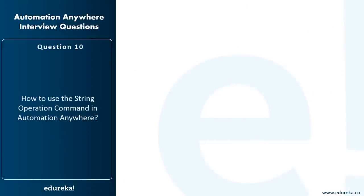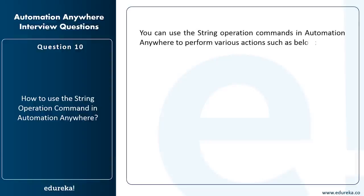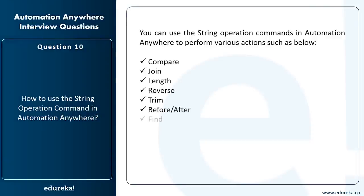How do you use the string operation command in Automation Anywhere? You can use the string operation command to perform various actions: comparing two strings, joining strings, finding the length of a string, reversing a string, trimming a string, finding before and after a string, changing to lowercase or uppercase, replacing a string, splitting a string, and finding a substring from a string.